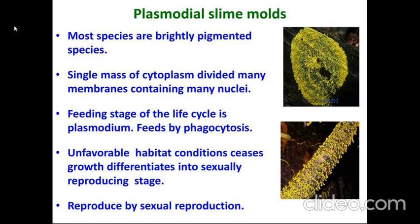Euglena is the key example. The fourth type is plasmodial slime molds. Most species of them are brightly pigmented. A single mass of cytoplasm is divided into many membrane-bound regions containing many nuclei. The feeding stage involves phagocytosis, where the plasma membrane of the cell engulfs food particles. In unfavorable habitat conditions, they cease their growth and differentiate into a sexually reproducing stage.